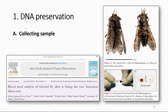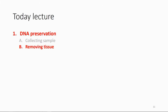Another way to collect DNA is from a blood sample via a parasite or fly. For example, flies suck blood from the animal, so you can collect the flies and extract the blood sample from them. This way, you can also obtain the DNA of the mammal or animal host.